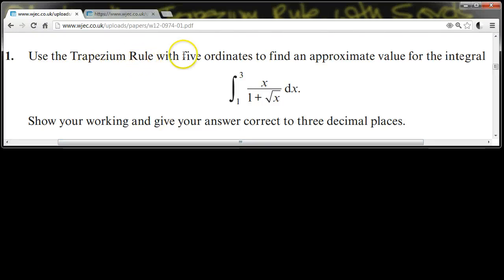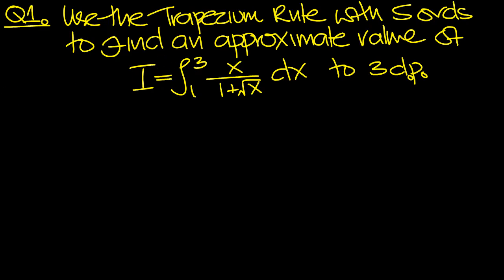Use the Trapezium Rule with 5 ordinates to find an approximate value for the integral between 1 and 3 of x over 1 plus root x. Show your working and give your answer correct to 3 decimal places. So here's the problem then.